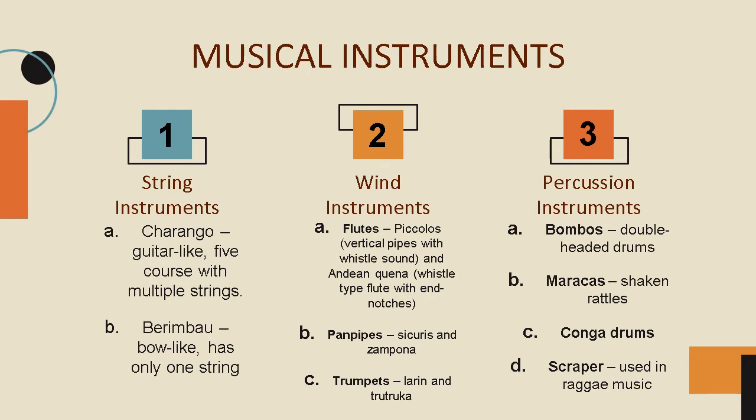Well-known trumpets are also part of primitive Latin American music. The third category are the percussion instruments, which make sounds when an outside force is applied on their surface. Bambos are double-headed drums made of wood and animal fur. Maracas are instruments that produce sound when shaken. Conga drums originated from Africa and are characterized as tall, narrow, and single-headed. The scraper is made of bone with a saw-like surface, struck with a stick, and was commonly used in reggae music.